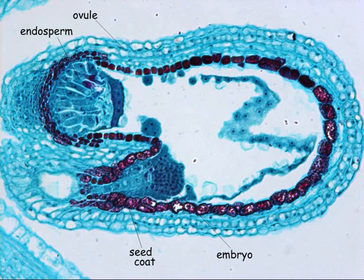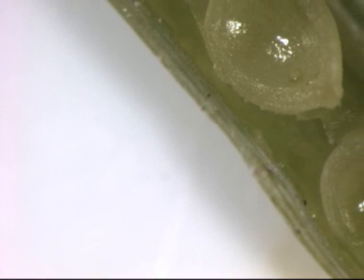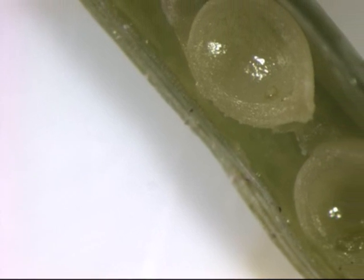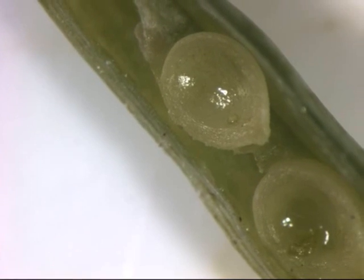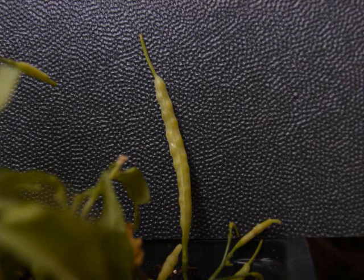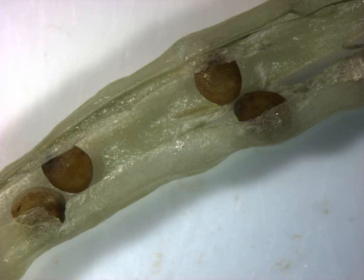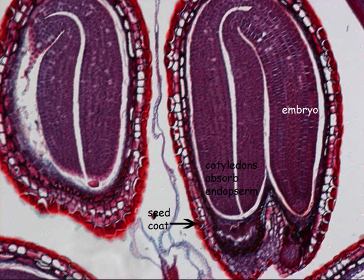Endosperm serves as storage of nutrients for the embryo. Both embryo and endosperm develop inside the seed. An ovule develops into a single seed. Many seeds develop inside the ripened ovary that develops into the fruit. The seed carries the new genotype within the embryo, coming from the unique blend of maternal and paternal genes carried in the egg and sperm cells, while the endosperm nourishes the embryonic plant during germination.